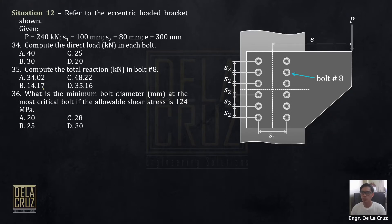Okay, so let's have situation 12. Refer to the eccentric loaded bracket shown. You have P, we have S, S1, S2 given, and the eccentricity. And this is indicated as bolt number 8.